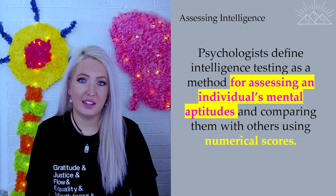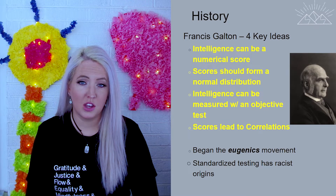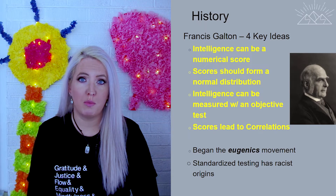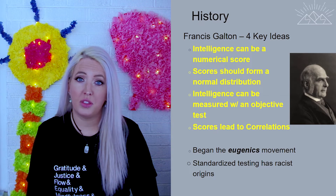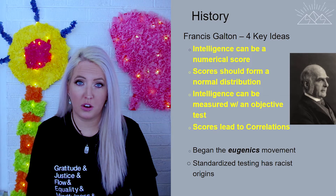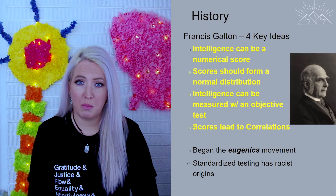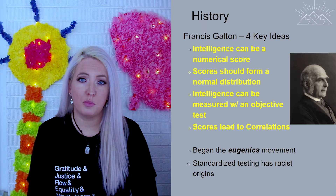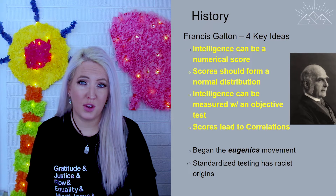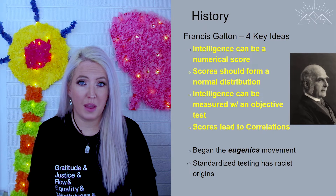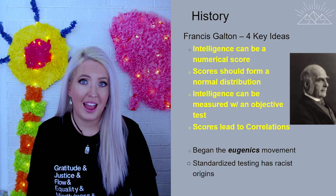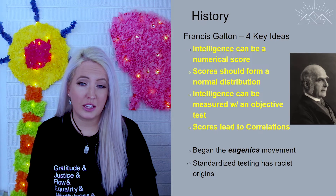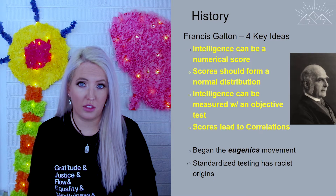The idea that intelligence can be measured using an intelligence test was first introduced by Francis Galton. He believed that intelligence could be expressed as a numerical score, that these scores would form a normal distribution curve, and that an objective test could predict other outcomes. It is also important to note that Galton was one of the individuals who began the eugenics movement, and that standardized intelligence testing does have racist origins — these tests were meant to prove that some groups were more intelligent than others, even though that is not actually accurate.